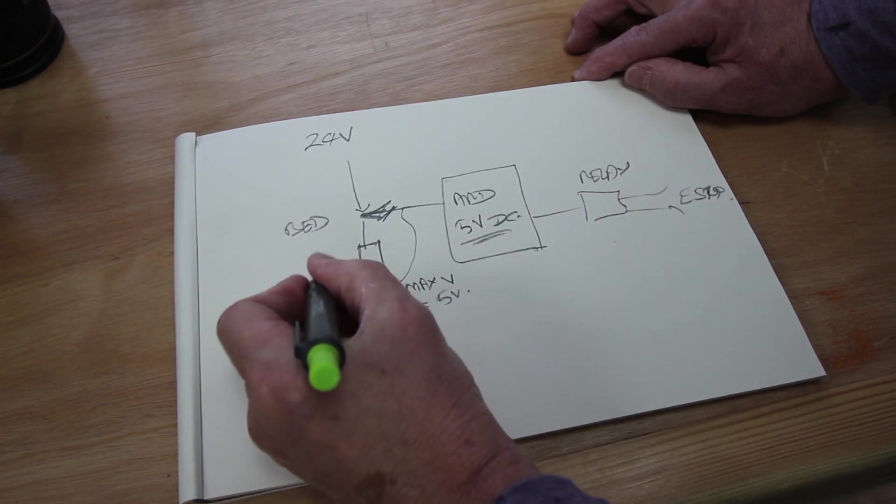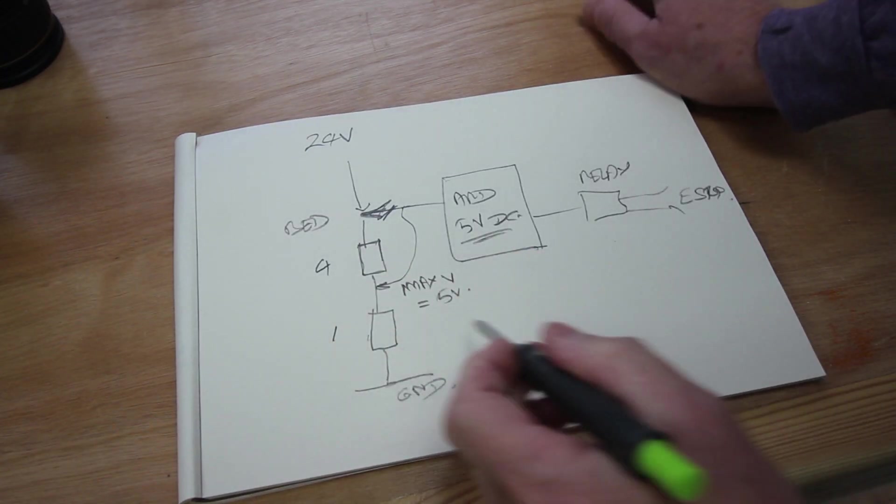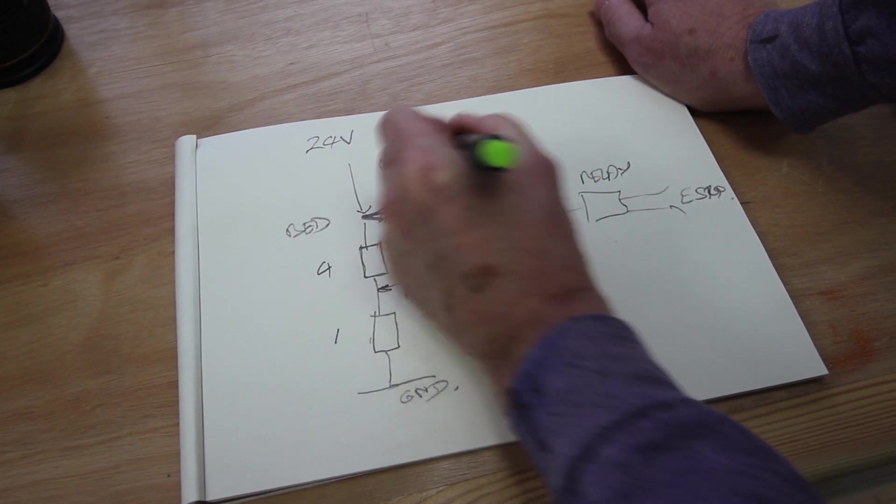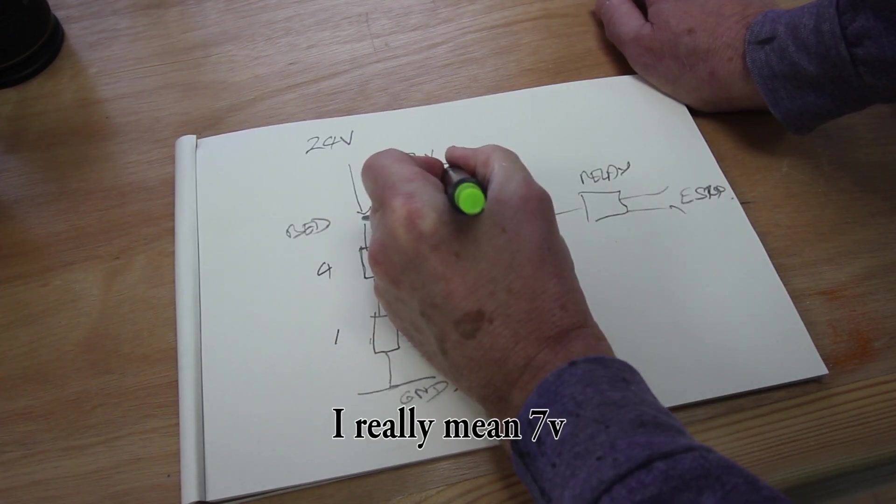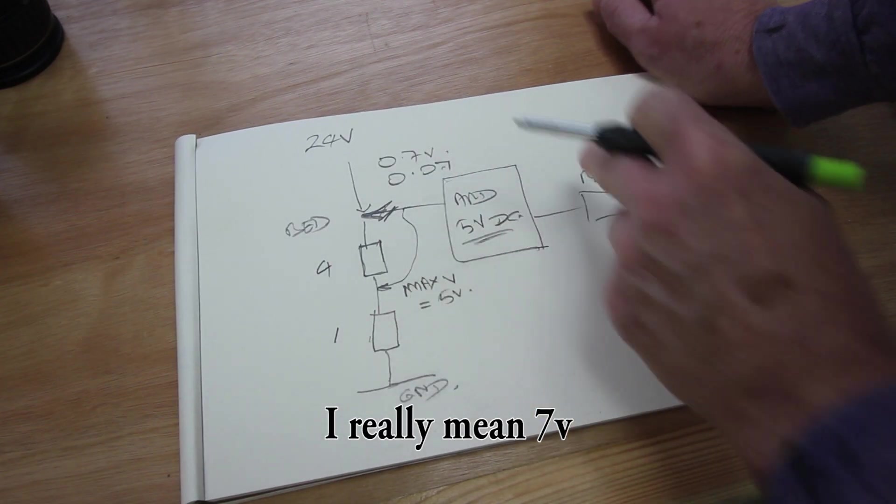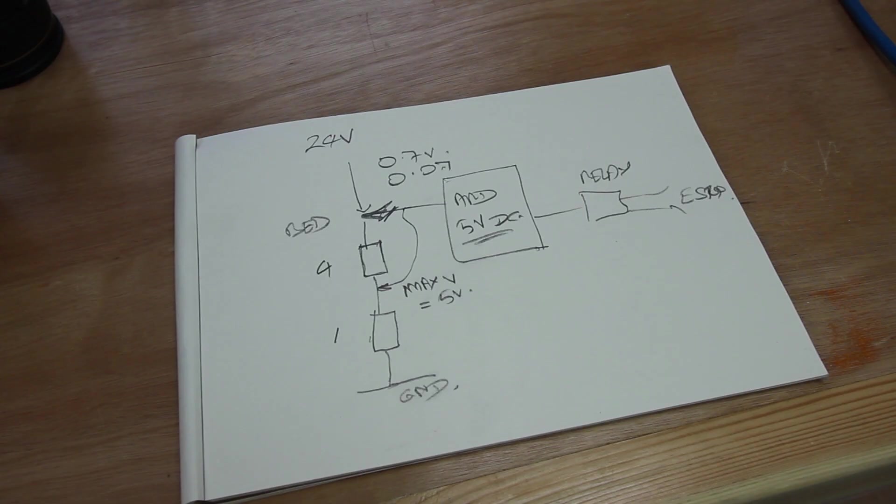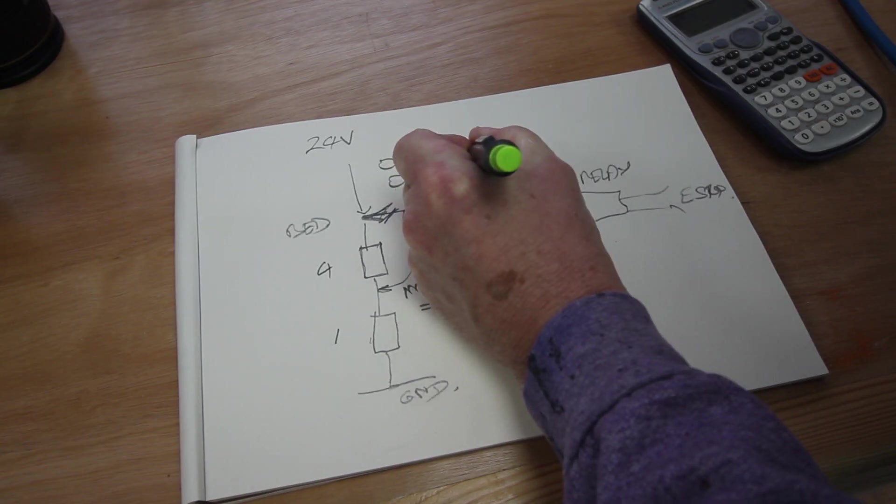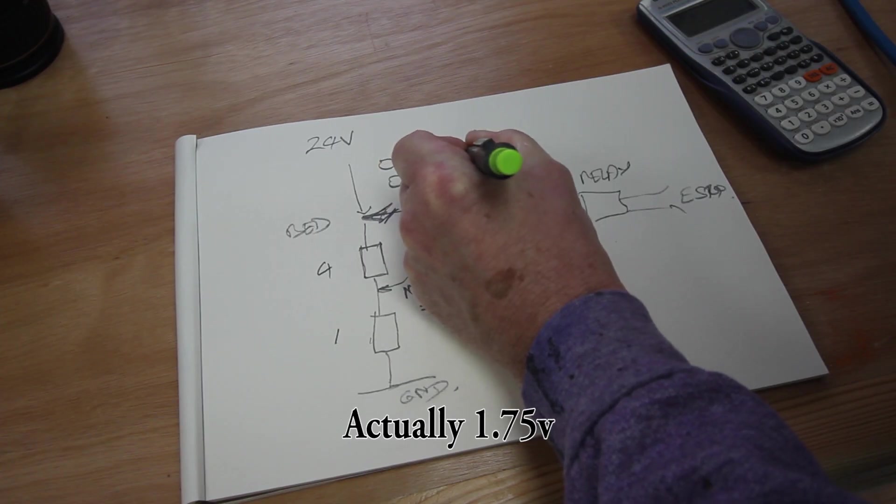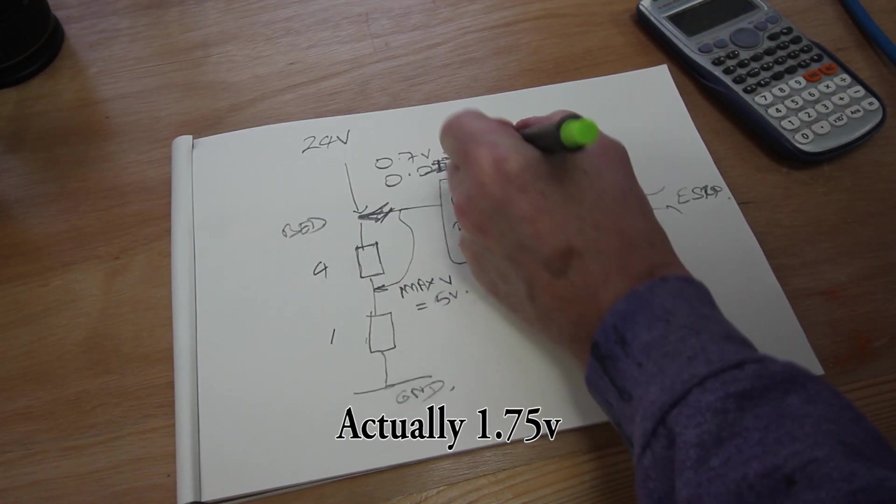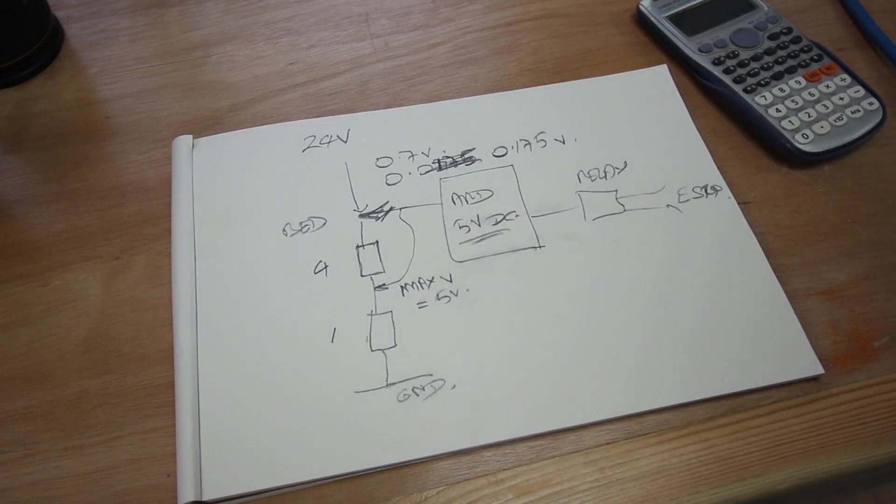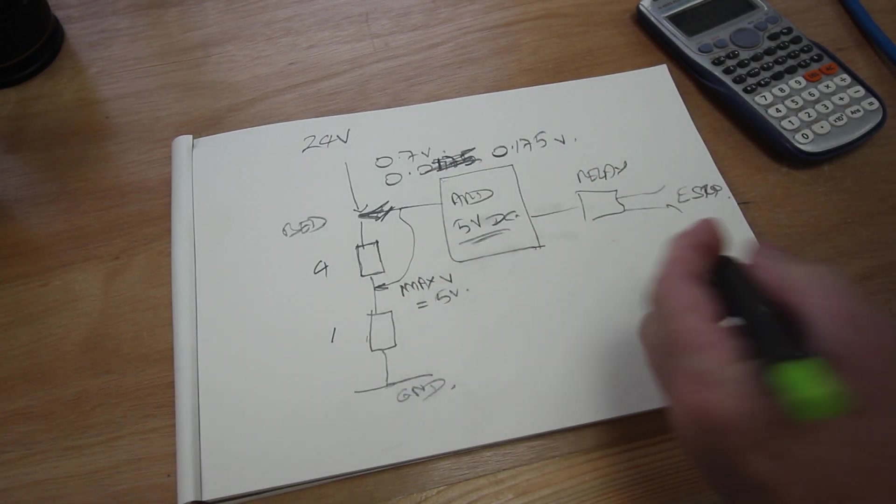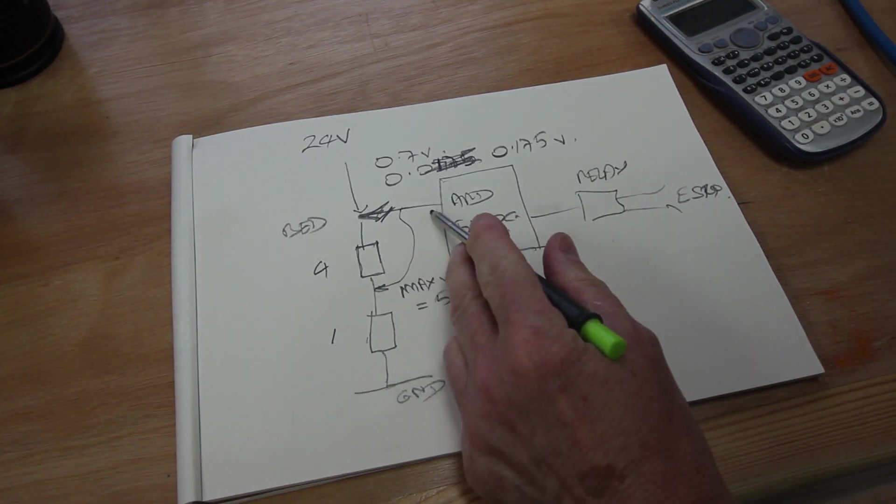So if it's a four to one ratio, let's say, then my 0.7 of a volt, 700 millivolts of noise has now become 0.7 divided by four. Let me work that out. Right, my noise level has gone down to 0.175 volts. So that gives me a significant advantage.